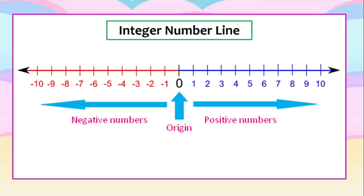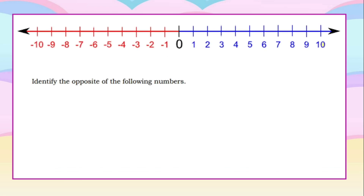In previous years, we learned about positive numbers — for example, 1 is less than 2, and 6 is more than 5. But with negative numbers, it is always the other way around. For example, negative 2 is greater than negative 4, or negative 9 is less than negative 7. Now let's try using the number line to identify the opposite of numbers. The opposite of 1 is negative 1 because they have the same distance from the origin — 1 unit. 1 is 1 unit to the right and negative 1 is 1 unit to the left.